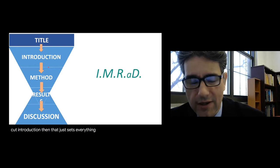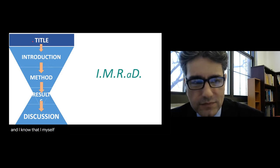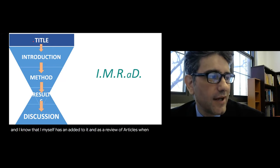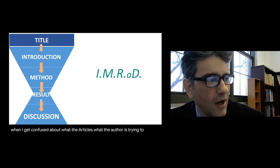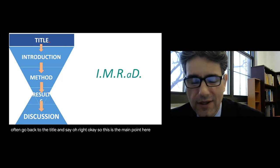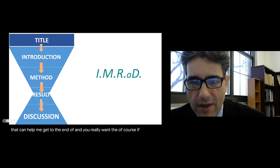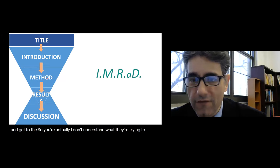As an editor and reviewer, when I get confused about what the author is trying to say, I'll often go back to the title. That can help me get to the end — and you really want the reader to move on to the end. You don't want that person to give up and say, 'I don't understand what they're trying to say.' That's the last thing you want.